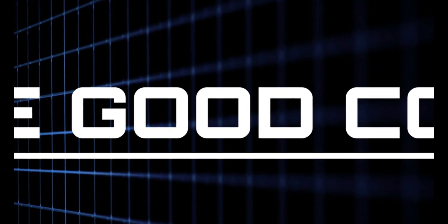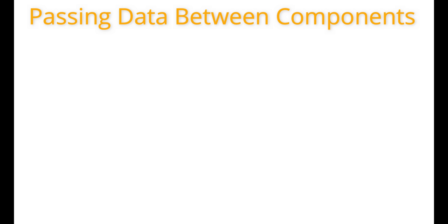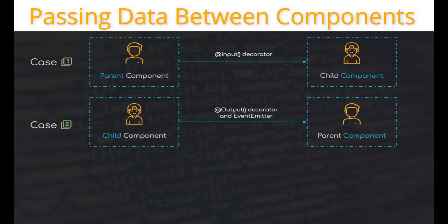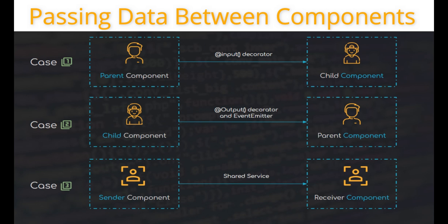Hey guys, welcome back to another video. My name is Samuel and in this video we will be seeing different common ways to transfer data between components. We will take a look at three different cases. Case 1: transferring data from parent to child via input decorator. Case 2: transferring data from child to parent via output decorator and event emitter. Case 3: transferring data from non-related components or sibling components via services.